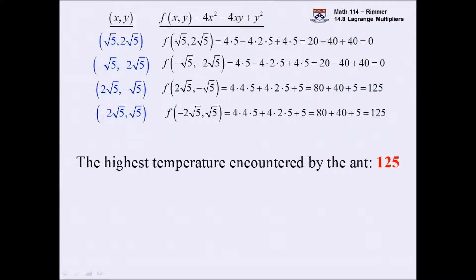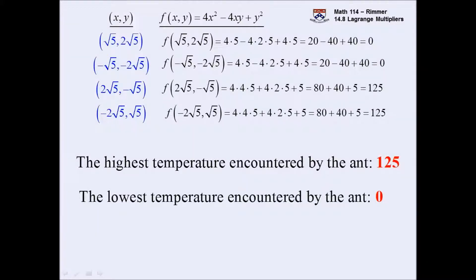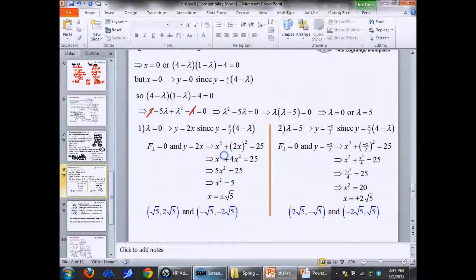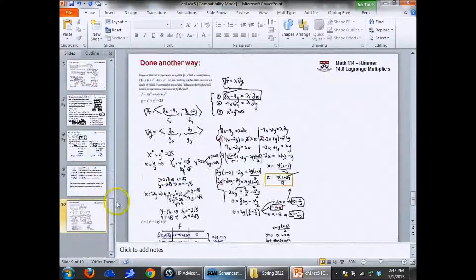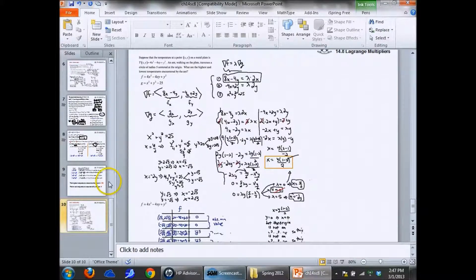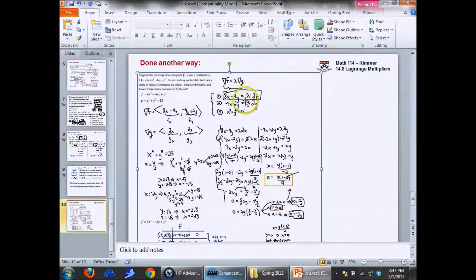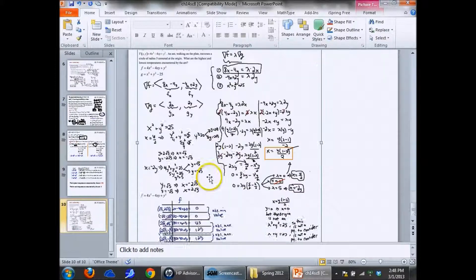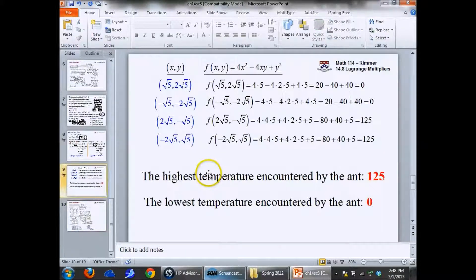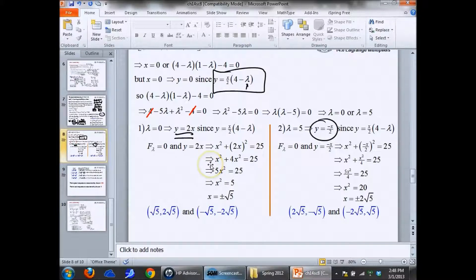Zero is the minimum temperature and 125 is the maximum temperature - no further argument needed after that. The same problem done using the ∇f = λ∇g approach works out nicely as well. Have a good break, safe travels, and I'll see you back here on the 11th.